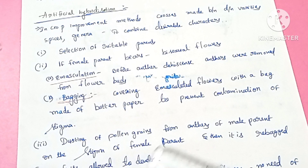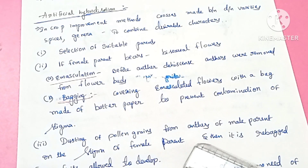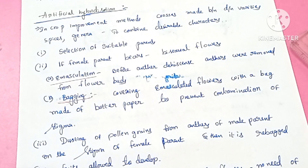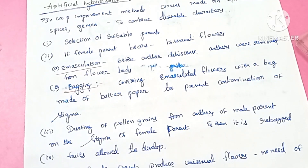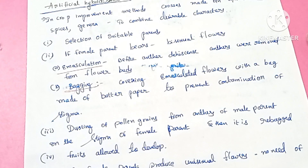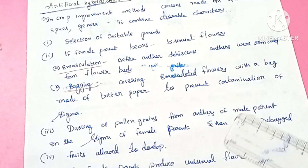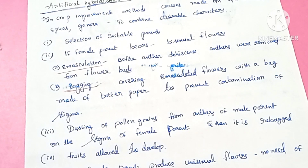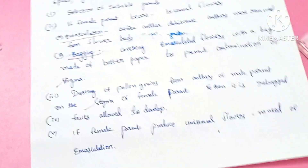Pollen grains are collected from the anthers of the male parent and dusted onto the stigma of the female parent. Then the flower is re-bagged. This prevents any other pollinating agents from contaminating the stigma. After bagging, fertilization is allowed to occur, followed by fruit formation. This technique is called artificial hybridization.